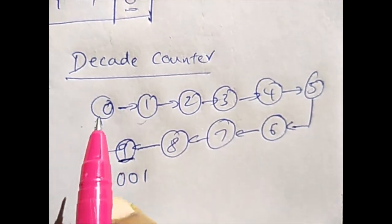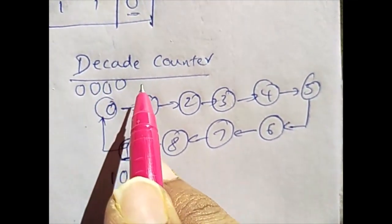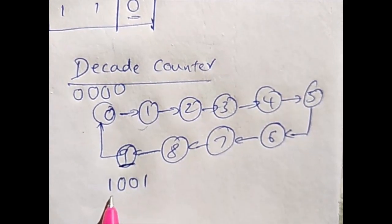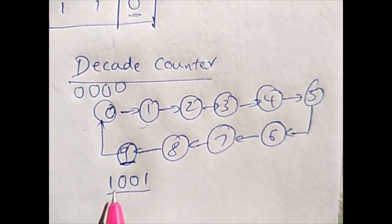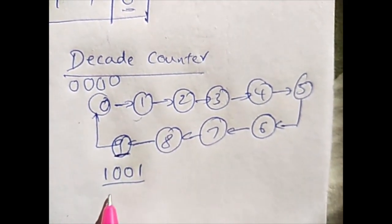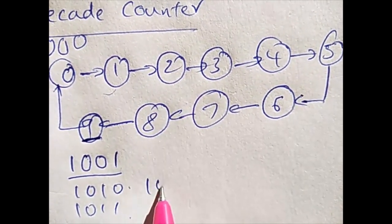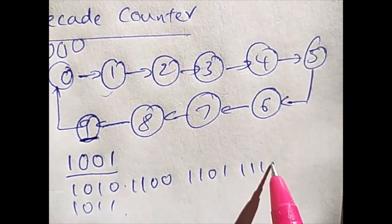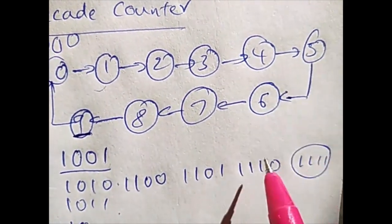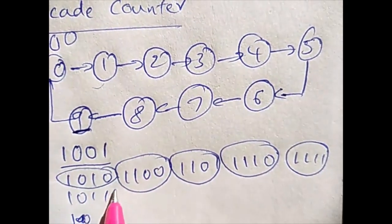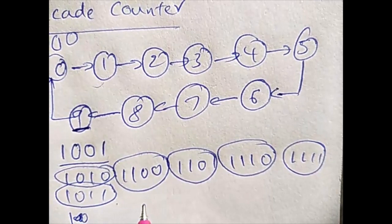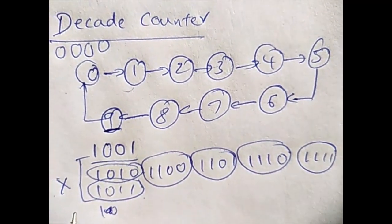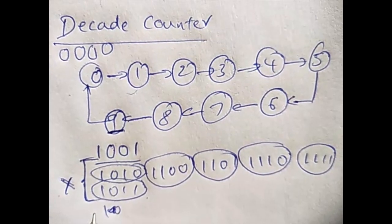Starting from 4 zeros, we count 0 through 9 using 4 binary digits. However, with 4 bits we can represent numbers 10 through 15 as well — 1010, 1011, 1100, 1101, 1110, 1111. We don't require these numbers for a decade counter, so we take them as don't care conditions. First, let's make a state table.